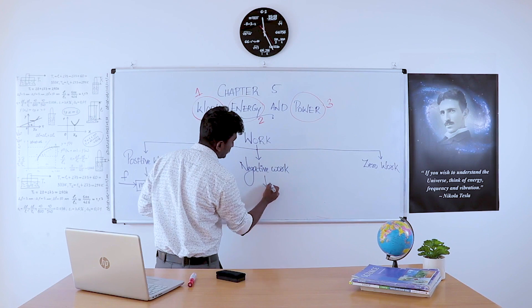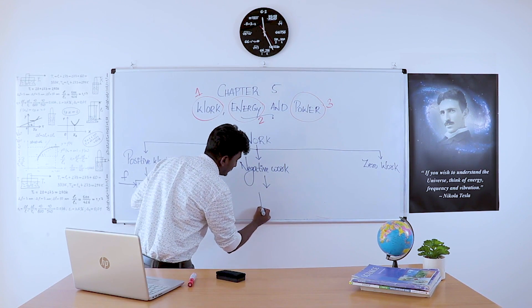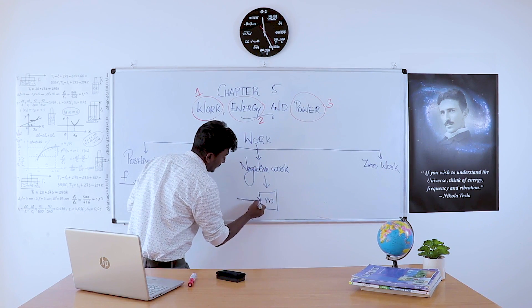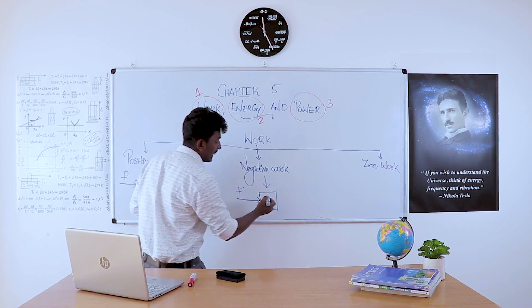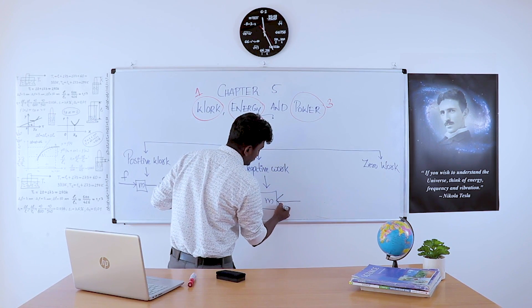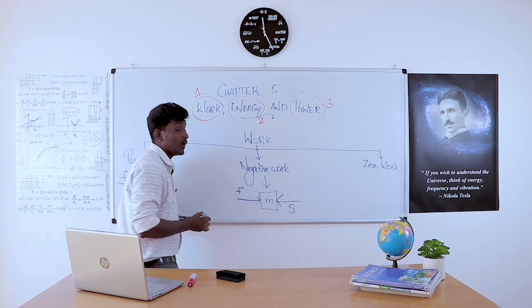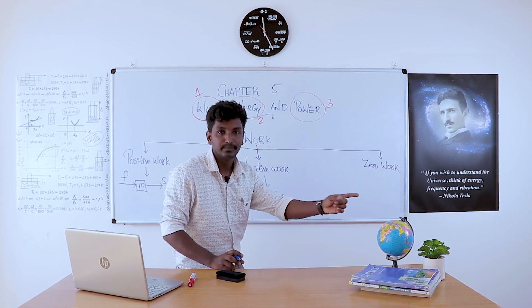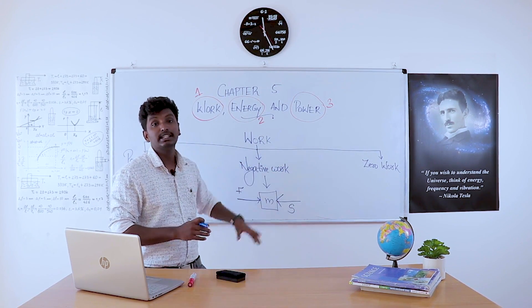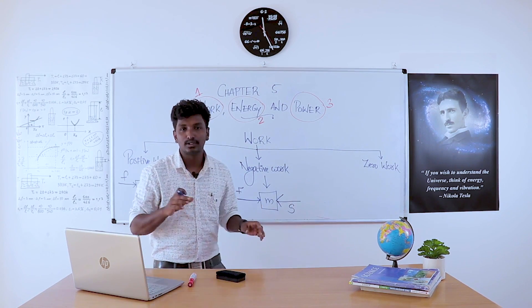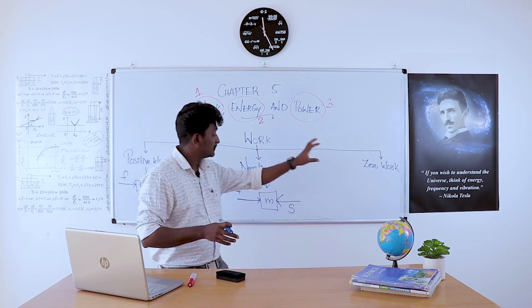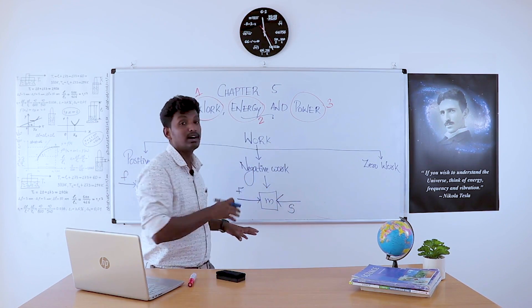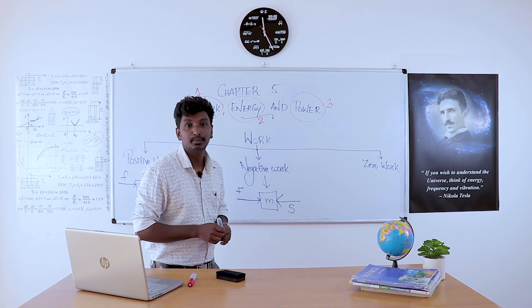Moving to the second one: negative work. Similarly, we consider an object of mass m and apply a force to it. If the object is displaced in the direction just opposite to the applied force, then work is said to be negative. Here, force and displacement are in opposite directions.